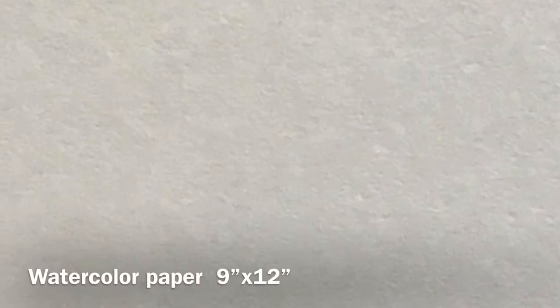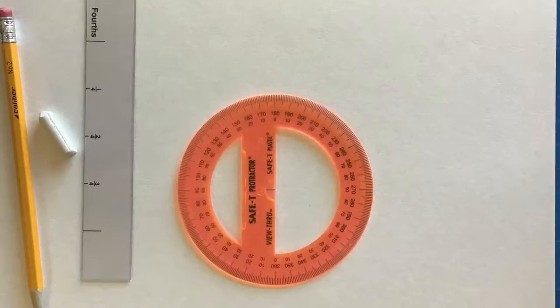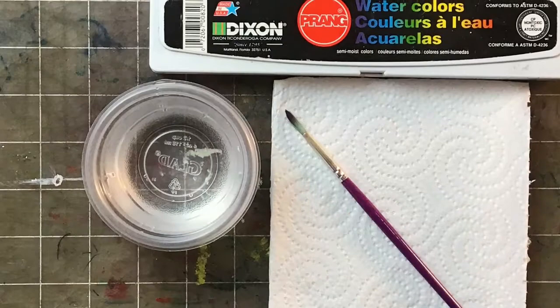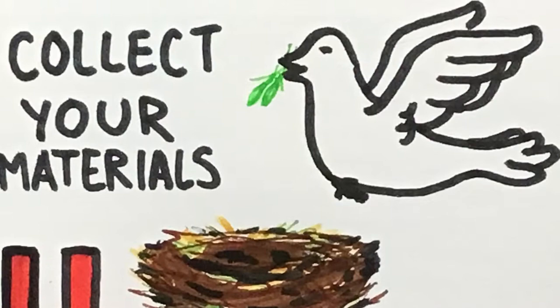We'll be using watercolor paper in today's painting, as well as pencil, your ruler and protractor, and a white crayon. For our paint we're going to be using watercolors, a brush, a paper towel, and a cup of water. So go ahead, pause the video, collect your materials and meet me back here when you're ready.